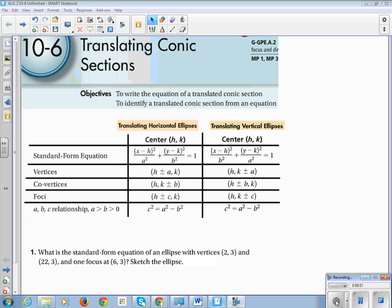This is Chapter 10, Section 6, Translating Conic Sections. Our learning objective is to write the equation of a translated conic section. So now we're not going to be at the origin anymore. We're going to be all over the grid. And then to identify a translated conic section from an equation. So now we're going to be detectives. We're going to have to look at an equation and say, Hyperbola, Circle, Ellipse.